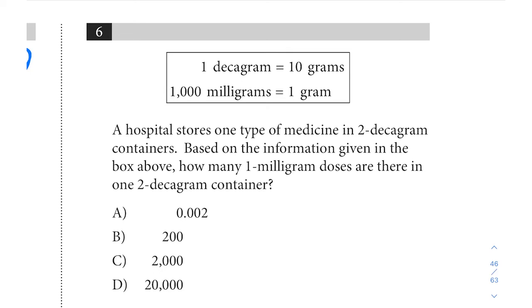Let's see what we have to do with these relationships that they give us. A hospital stores one type of medicine in two decagram containers. Based on the information given in the box above, how many one milligram doses are there in one two decagram container? So the key with this is you always want to start with what's given.